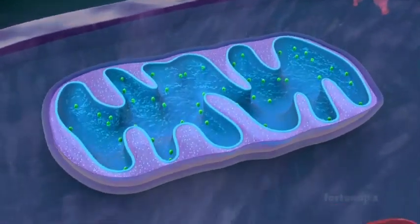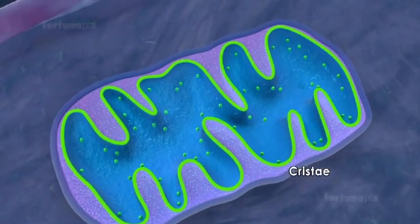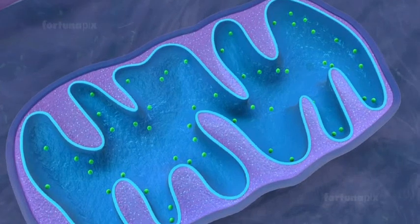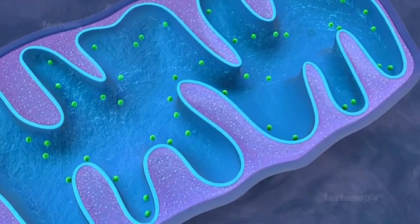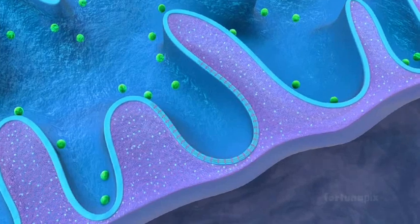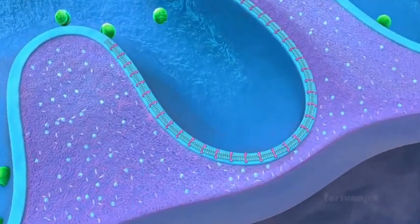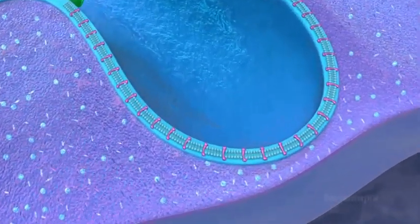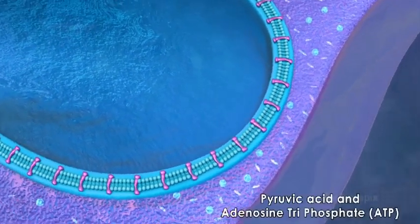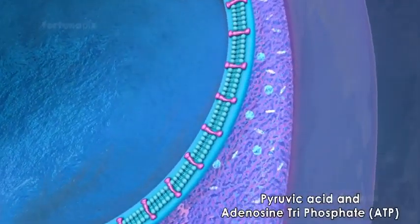The inner membrane has many inward folds called cristae. The folds increase the surface area and are the working surfaces for mitochondrial reactions. The inner membrane is selectively permeable to certain molecules, such as pyruvic acid and adenosine triphosphate (ATP).